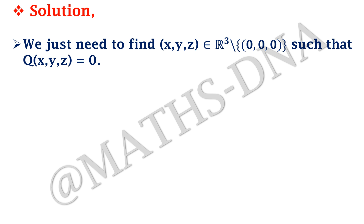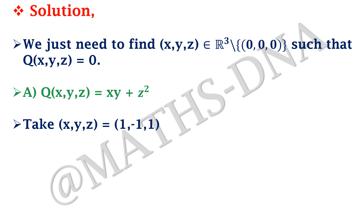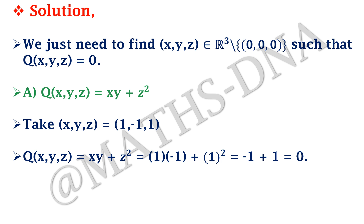We just need to find (X,Y,Z) in R³ minus {(0,0,0)} such that Q(X,Y,Z) = 0. For Option A, Q(X,Y,Z) = XY + Z². Take (X,Y,Z) = (1, −1, 1). Then Q = (1)(−1) + 1² = −1 + 1 = 0. You only need to find a single combination that gives Q = 0, and that is a non-trivial solution. So Option A is correct.